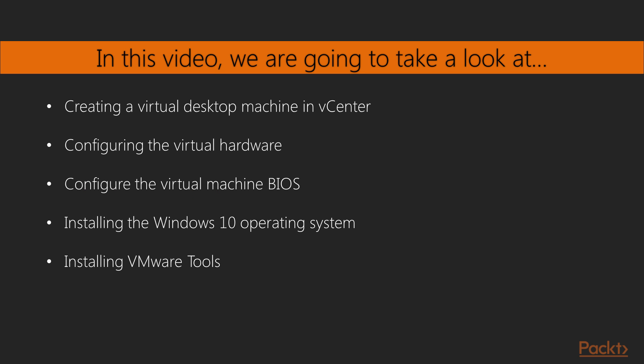To build the desktop, there are several steps we need to complete. First of all, you need to create the Virtual Desktop machine in vCenter. Once the virtual machine has been created, you need to configure the virtual hardware to reflect the fact that the desktop is running as a virtual machine. This includes tasks such as configuring the virtual machine BIOS. Once these steps have been completed, we can move ahead and install the Windows 10 operating system, and finally VMware Tools.